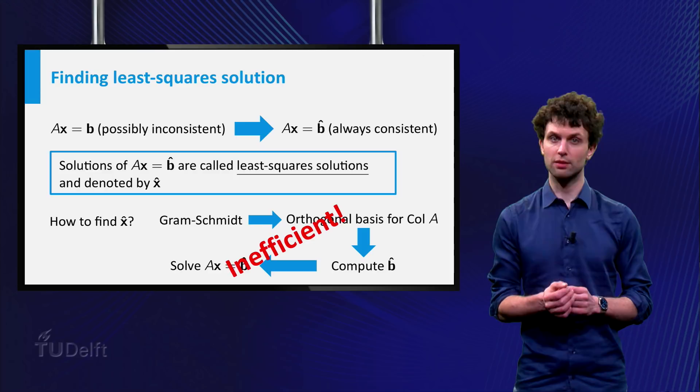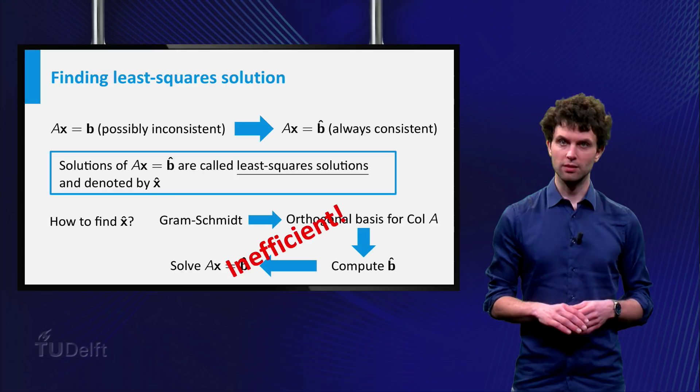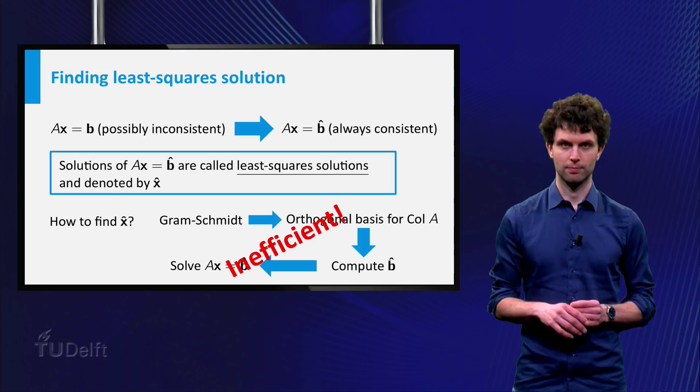However, in class you are going to learn an alternative way to compute the least square solutions x̂. This alternative method works a lot quicker because it bypasses the computation of b̂.